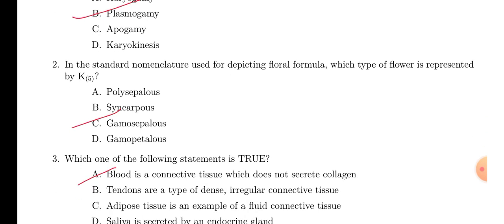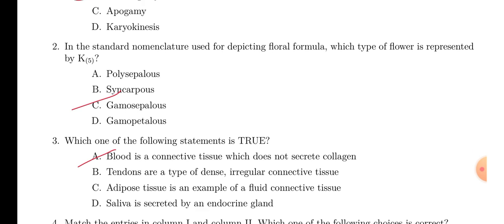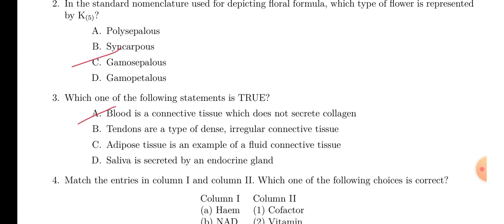In the next question, flower represented by K within bracket 5, that bracket means actually united sepal or petal. Now, K means sepal. So, that is the term we use, gamosepalous. Option C is the answer.